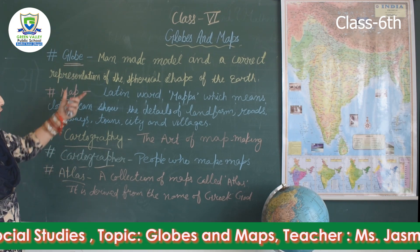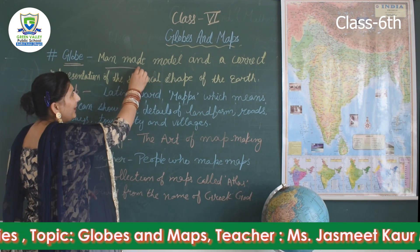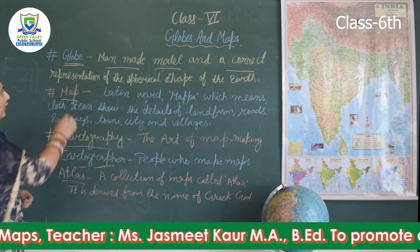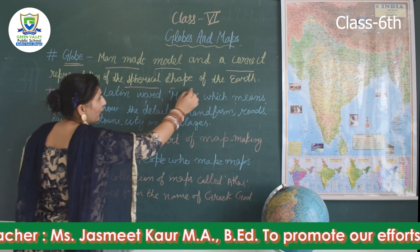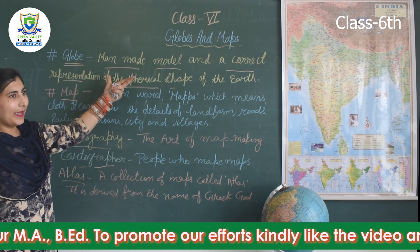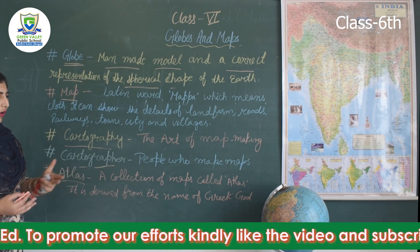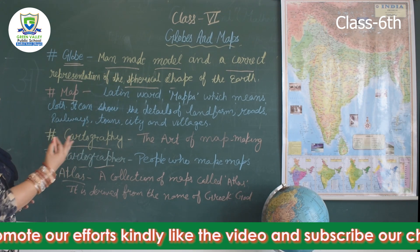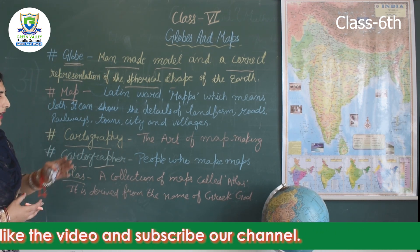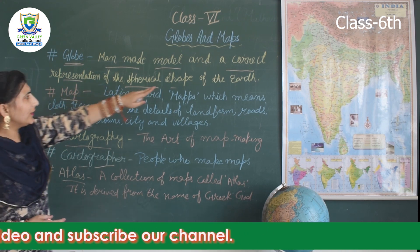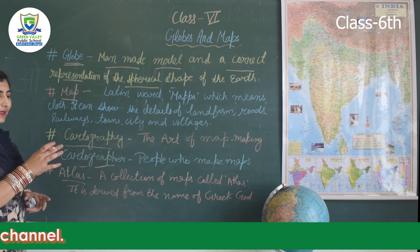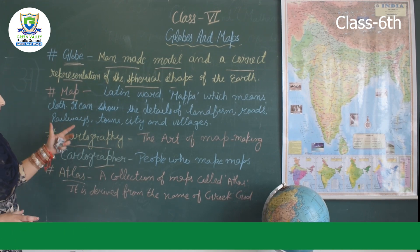What is a globe? A globe is a man-made model and a correct representation of the spherical shape of the earth. With the help of a globe we can see many countries and their size. It is called the correct representation because it shows us the right size and direction of each country.